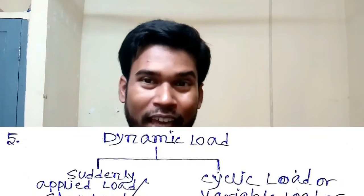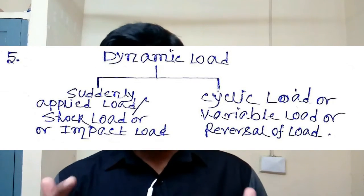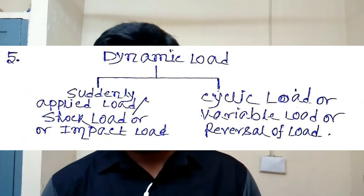Now switching to dynamic loading, we can distinguish dynamic loading into two different criteria. The first is suddenly applied load, shock load, or impact load. In this case the load acts for a very small amount of time — microseconds or milliseconds. For example, a bowler bowls and a batsman hits the ball with a bat — the whole load of the ball comes on the bat for a very small instant of time. That is called suddenly applied load, shock load, or impact load.